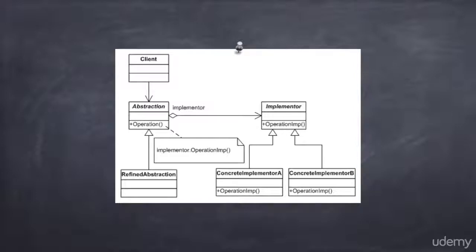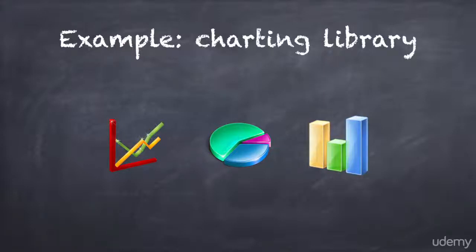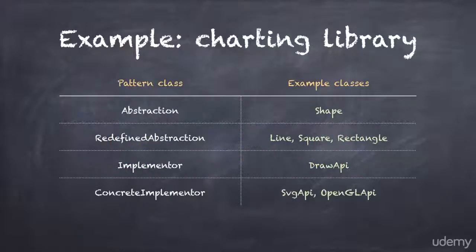To demonstrate the bridge pattern, I'm going to actually implement the example I talked about at the start of this lecture. I am going to build a charting library that uses the bridge pattern to separate an abstract shape hierarchy from an implementation hierarchy. I'm going to use the exact same classes I talked about earlier. So, I will implement the pattern with the following classes. Let's look at the code.